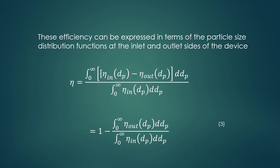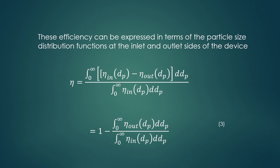At the outlet and inlet there will be a distribution of particulate materials coming into and out of the devices — a certain range of particles in that inlet and outlet. Based on that particulate material size distribution, the efficiency can also be expressed in terms of the particle size distribution function at the inlet and outlet sides of the devices.